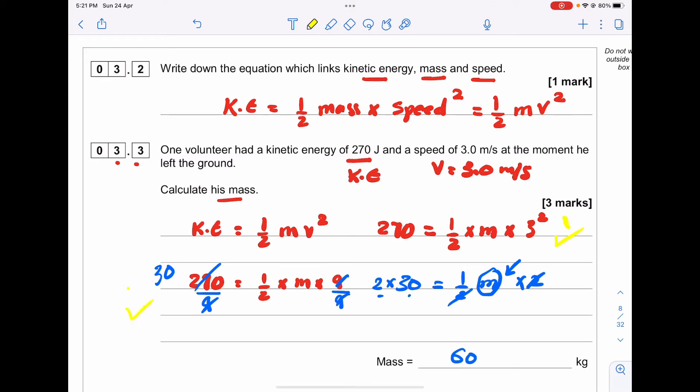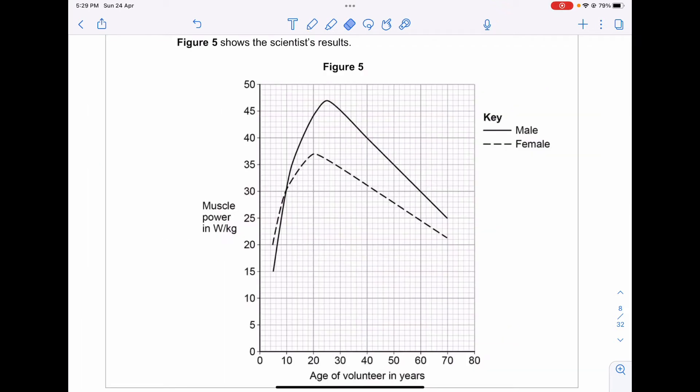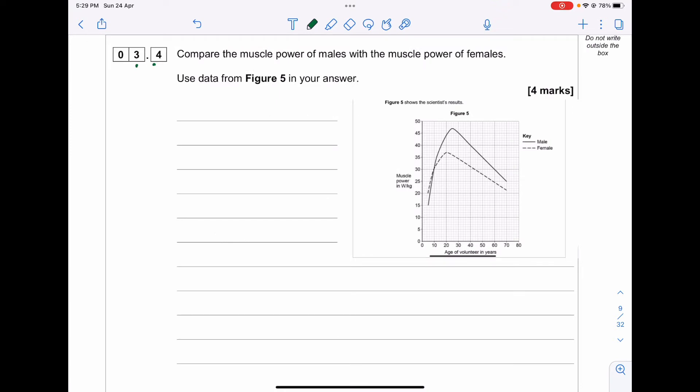Figure 5 shows the scientist's results. On the y-axis we have muscle power in watts per kilogram, and on the x-axis we have age of volunteer in years from 0 to 80. The solid line is for males, dotted line for females. Question 3.4: Compare the muscle power of males with females. From ages approximately 9 and above, males have greater muscle power than females for most of their lives.